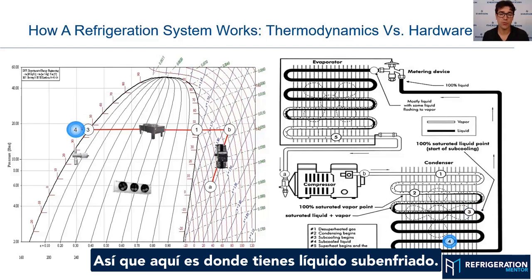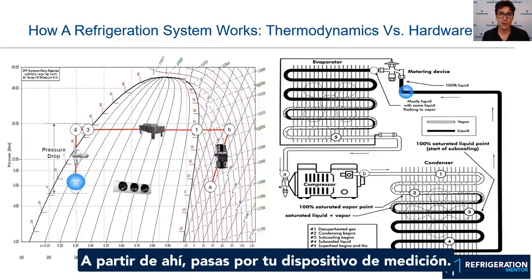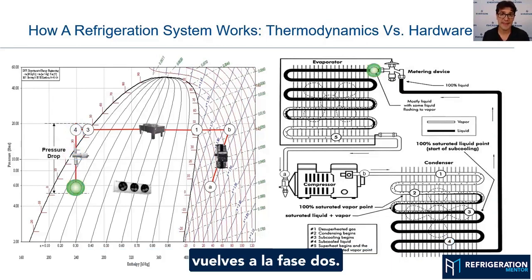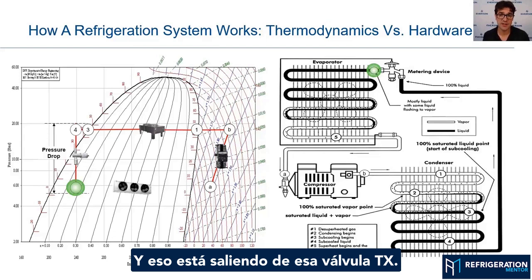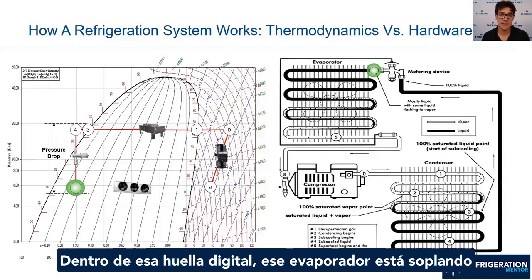Anything on top of that now is your subcooling, so this is where you have subcooled liquid. From there, you go through your metering device. You have that pressure drop, which pulls you back into the 2-phase — you have both liquid and vapor, flashing out of that TX valve.